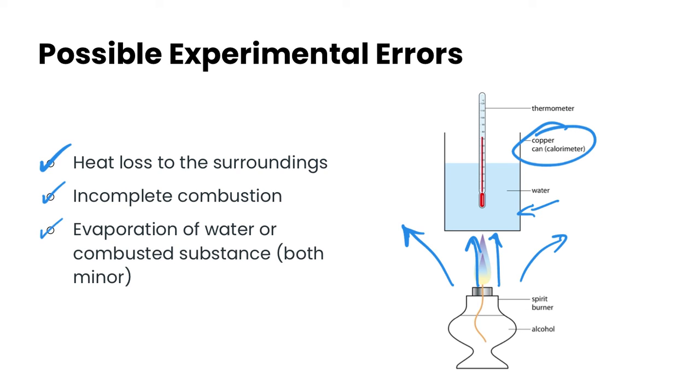Finally, the last one is that you could also have some evaporation of the water. So you'd be losing mass of water there, or evaporation of the combusted substance. So again, your mass value would be off for your combusted substance. Or you could have both. But both of those are pretty minor compared to the other possible errors here.